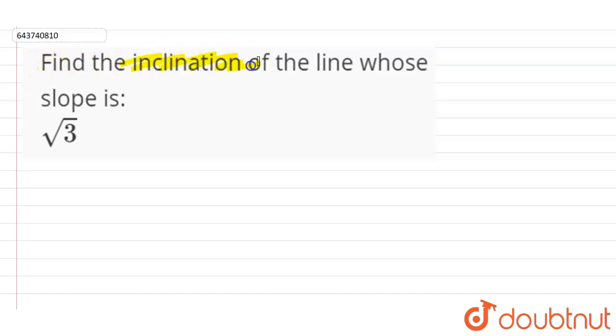Okay, so our slope is equals to √3. And we know that when θ is the inclination of a line, then the slope of a line is tan θ.